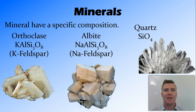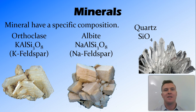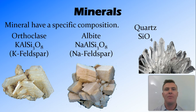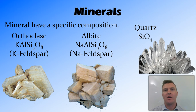Albite contains sodium, aluminium, silicon, and oxygen, and quartz contains silicon and oxygen. Now orthoclase and albite both come under the class of feldspar, which is a big group of minerals. One's at the potassium end, one's at the sodium end, and there's a whole heap of other feldspars between and around them.